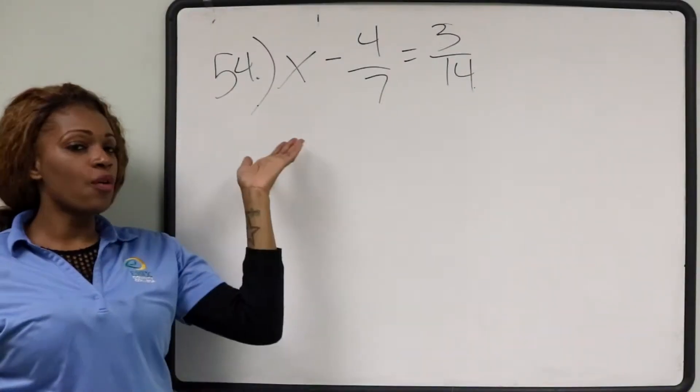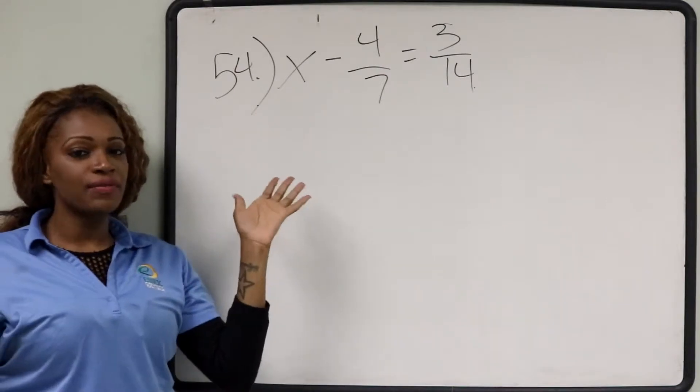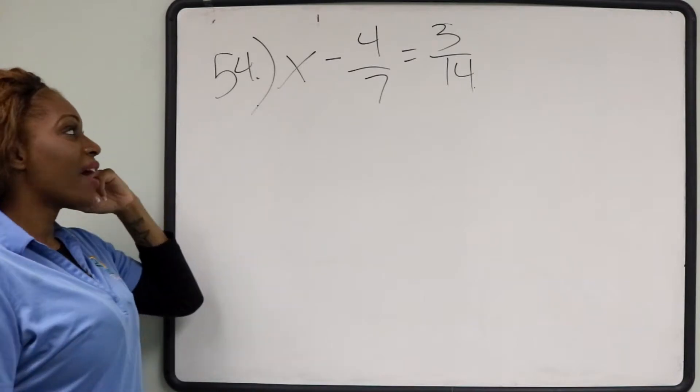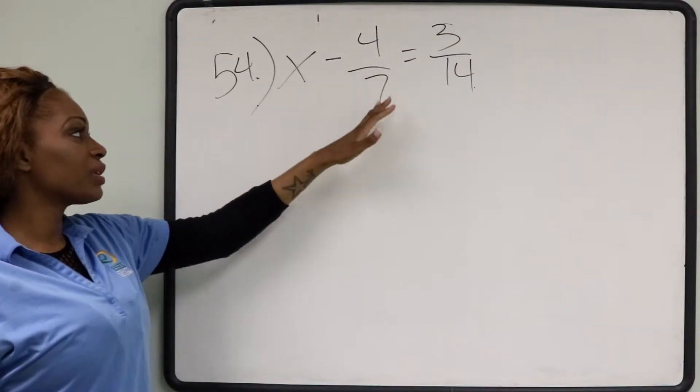What we basically want to do is solve for x or isolate x as a variable by itself. So in order to do that here, we have x minus, once again, negative 4 7ths.